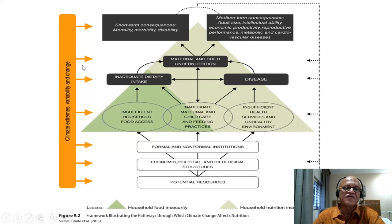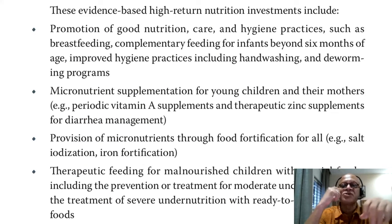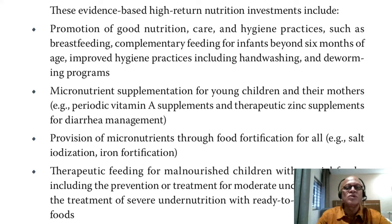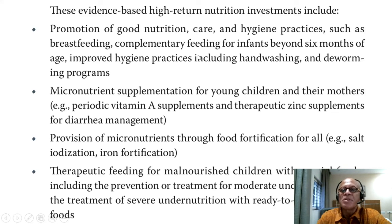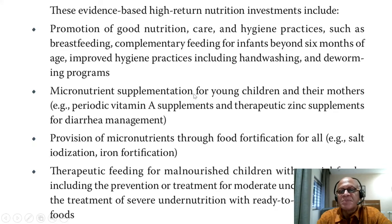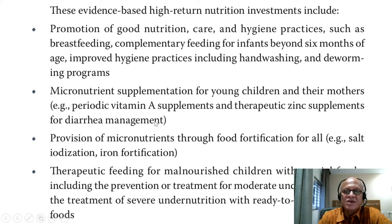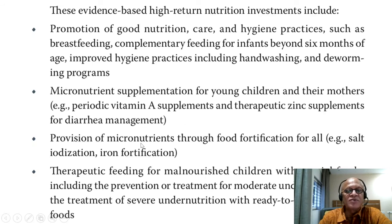Overriding all of these is climate forcing. Evidence-based high-return nutrition investments include: promotion of good nutrition care and hygiene practices such as breastfeeding; complementary feeding for infants beyond 6 months of age; improved hygiene practices including hand washing and deworming. Micronutrient supplementation for young children and their mothers — for example, periodic vitamin A supplements and therapeutic zinc supplements for diarrhea management. We talked about loss of zinc and iron in crops under high CO2 environments, which has to be taken care of going into the future.